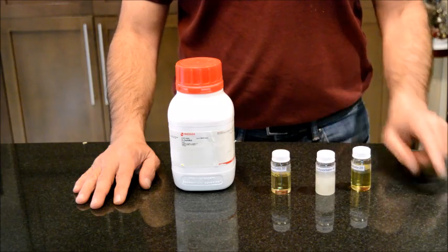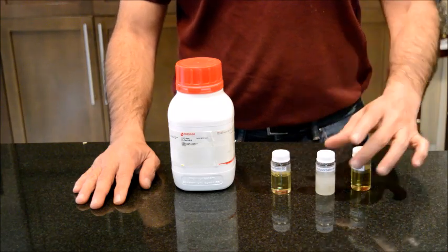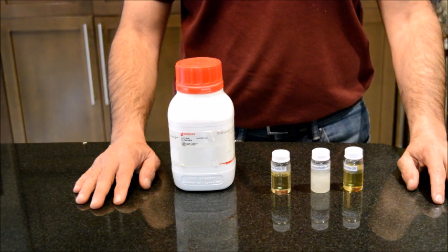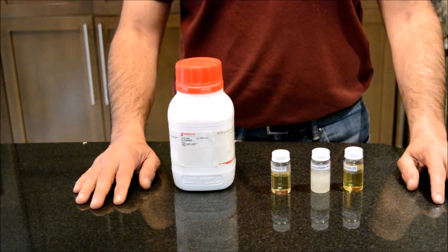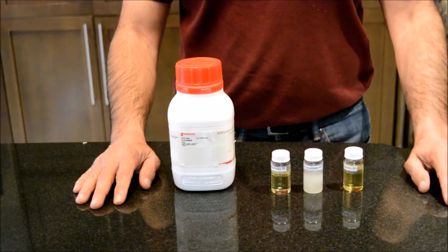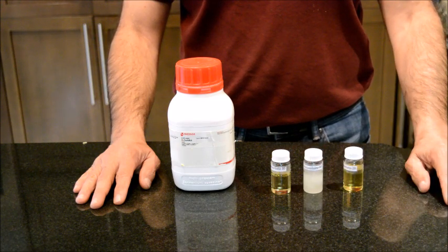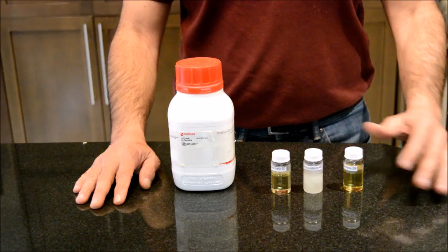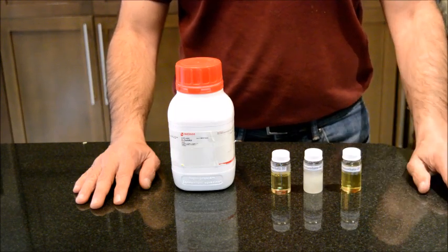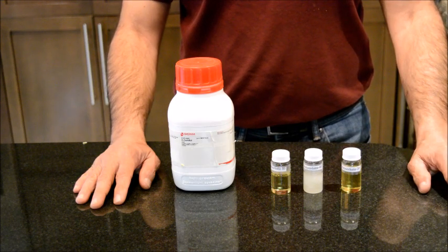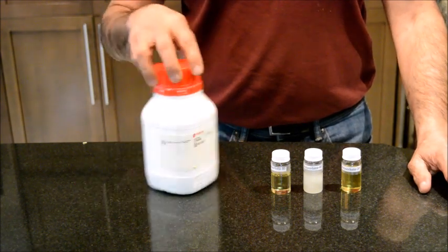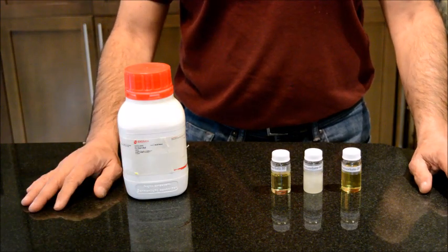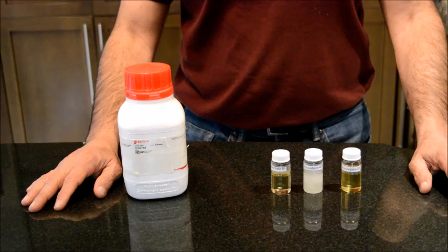polysorbate 20, polysorbate 60, and polysorbate 80. These are emulsifying agents used in the food industry, pharmaceutical, and cosmetic applications. They probably come in food grade, cosmetic grade, pharmaceutical grade, or even analytical grades. These polysorbates are made from sorbitol mixed with a certain number of moles of ethylene oxide plus fatty acids.